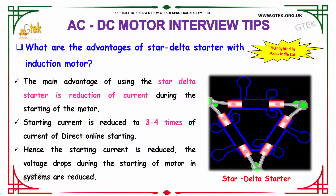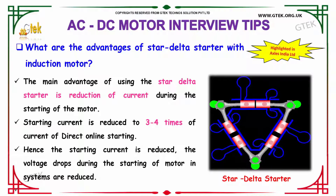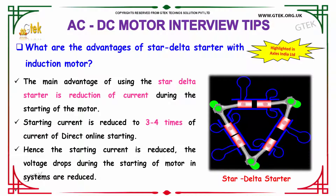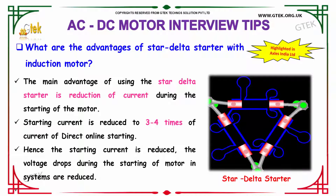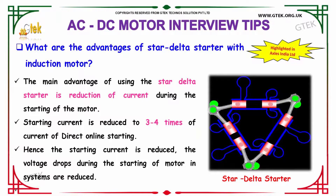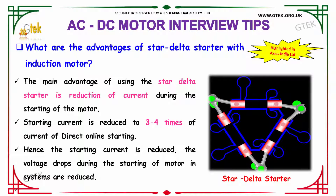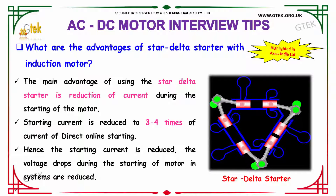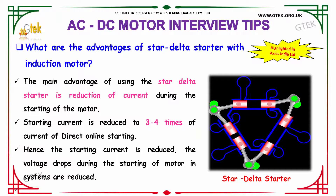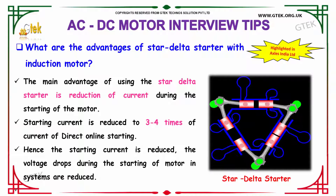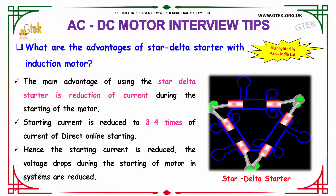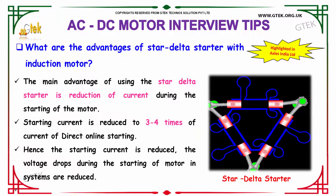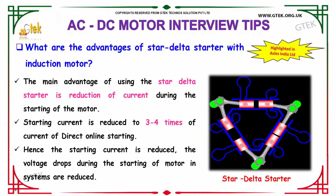What are the advantages of star delta starter with induction motor? The main advantage of using this star delta starter is to reduce the current during the starting of the motor. Starting current is reduced to 3 to 4 times of current of the direct online starting. Hence the starting current is reduced and the voltage drop during the starting of the motor in systems is drastically reduced.